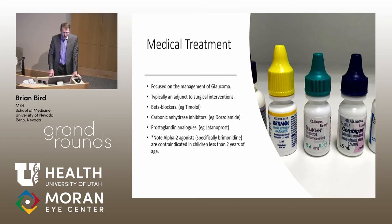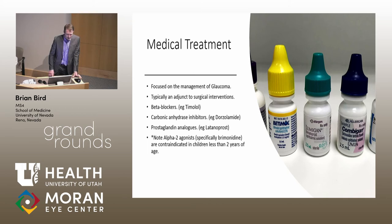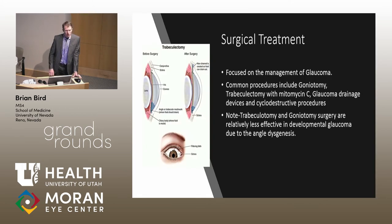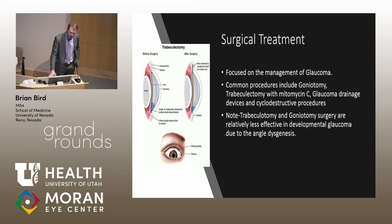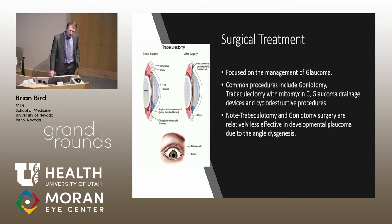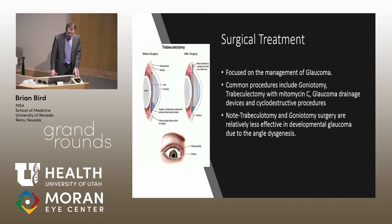Management of these patients focuses on the glaucoma itself. Just like any glaucoma patient, we start with medical options using drops. However, most patients aren't able to control glaucoma with drops alone, so we move to surgical treatment. Because of angle dysgenesis, trabeculotomy and goniotomy are less effective in these patients — they're historically more difficult to control. On average, these patients require about one and a half surgeries per eye to get the glaucoma under control.